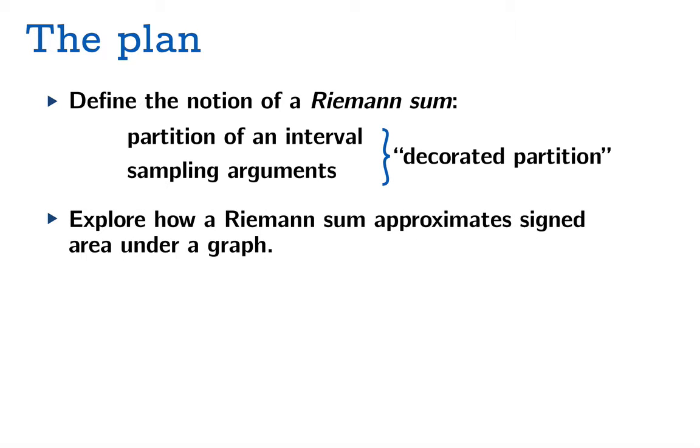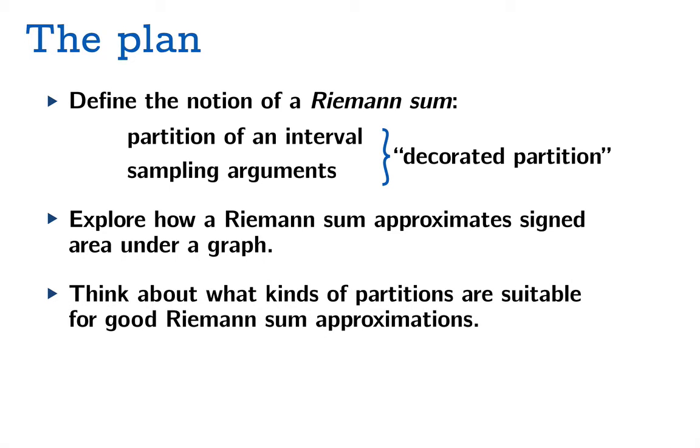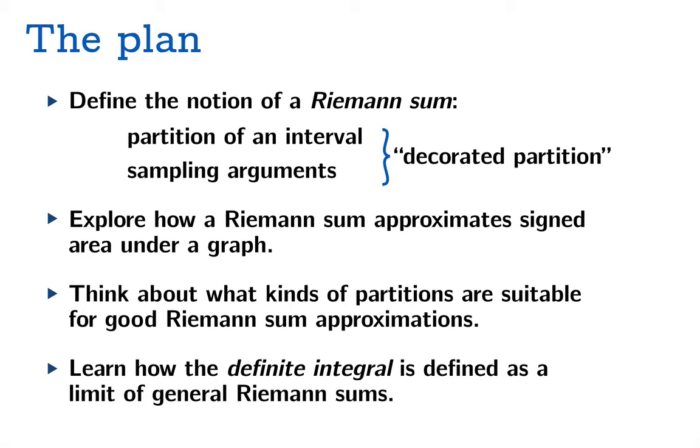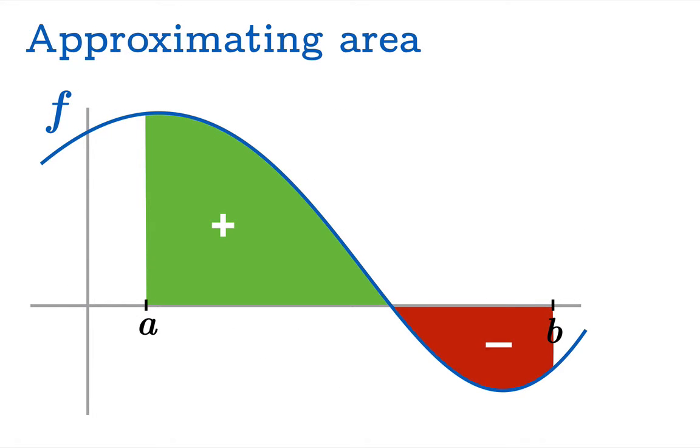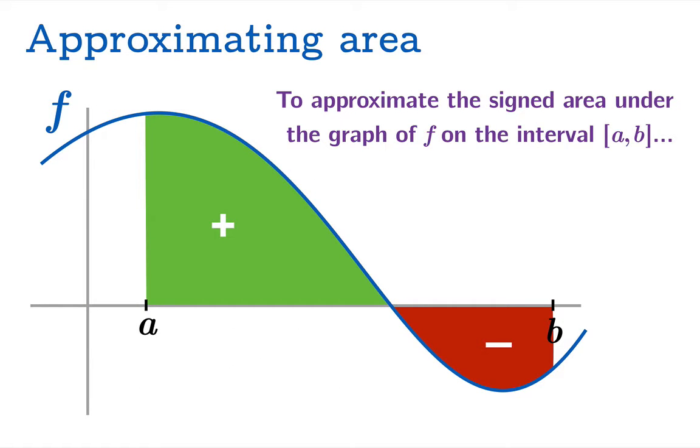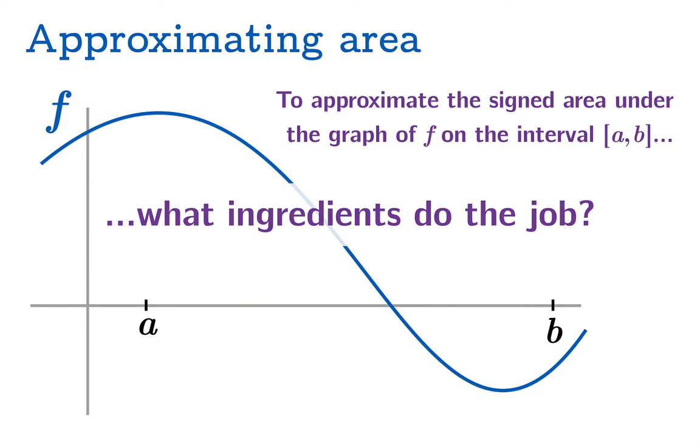We'll explore how a Riemann sum approximates signed area under a graph, and we'll think about what kinds of partitions are suitable for good Riemann sum approximations. We'll learn how the definite integral is defined as a limit of general Riemann sums. So let's start with the goal of approximating the signed area under the graph of f on the interval from a to b. We ask what ingredients do the job.